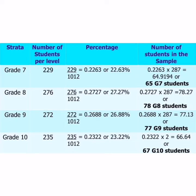Following the same procedure: for Grade 8, 0.2727 multiplied by 287 gives 78.20, so 78 students. For Grade 9, 272 over 1,012 gives 0.2688, multiplied by 287 yields 77.13, so 77 students. For Grade 10, 235 divided by 1,012 gives 0.2322, multiplied by 287 gives 66.64, which rounds to 67 students.